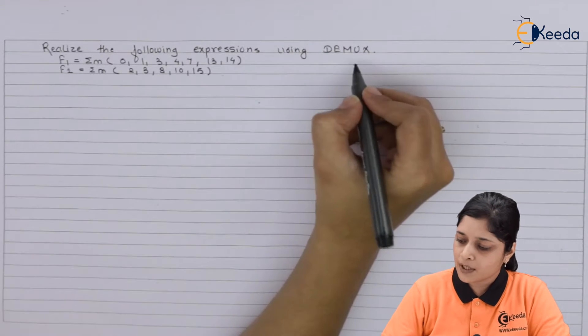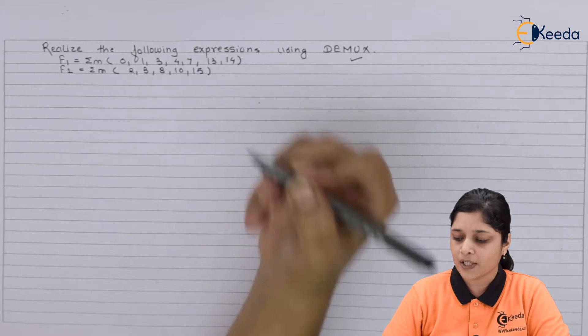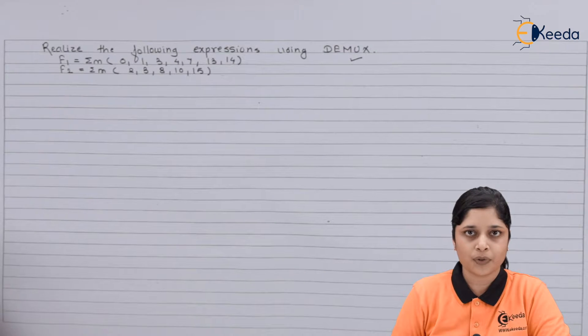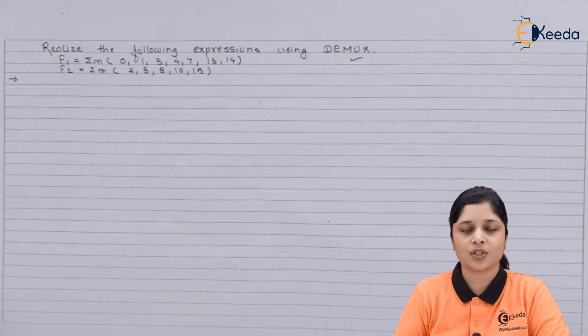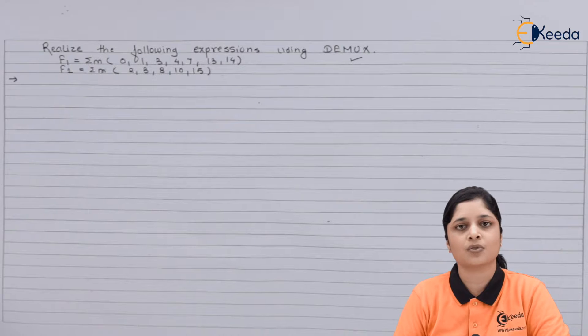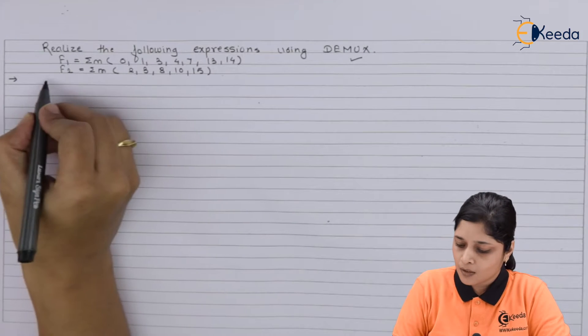Now DMUX is not specified here, so we have to identify which DMUX you are going to use. According to the minterms present in the given expressions, we are going to use 1 is to 16 DMUX.